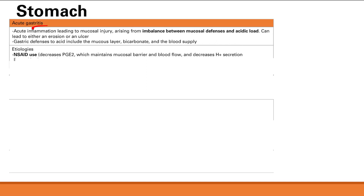The next etiology is burns — this is called a Curling ulcer. Why would a burn lead to mucosal injury? When you have burns, you get hypovolemia because you get massive evaporation from losing the skin barrier, so you lose a lot of fluid. With massive hypovolemia, the blood supply is affected — decreased blood supply means decreased nutrients and decreased oxygen, leading to mucosal injury. That's a Curling ulcer.